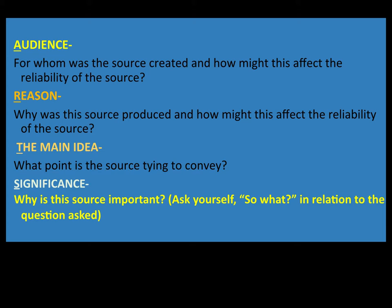R is for reason. Why was the source produced, and how might this affect its reliability? This is kind of talking about fake news — if the reason it was produced is to get you to agree with them, they have a biased opinion and might not tell the whole truth, which would definitely affect its reliability.